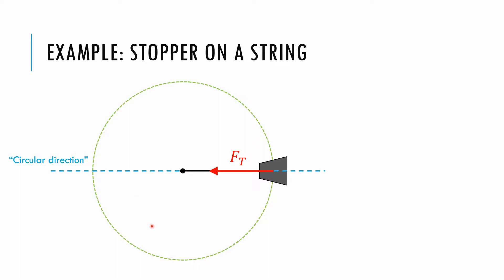What we care about is this direction — we can call it a circular direction, almost its own dimension. All we care about are forces acting towards or away from the center of the circle. When drawing free body diagrams, draw a diameter through the circle passing through the object in circular motion, then draw any forces along that diameter, in or out.